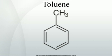The Wurtz-Fittig reaction involves an aryl halide and alkyl halide in the presence of sodium metal to give substituted aromatic compounds. When bromobenzene and methyl bromide react with sodium metal in dry ether solution, toluene is obtained. Similarly, when the sodium salt of toluic acid is heated with soda lime, toluene is obtained.